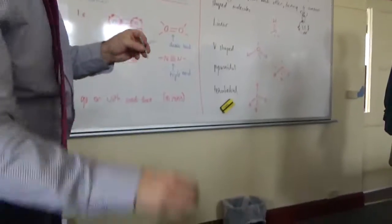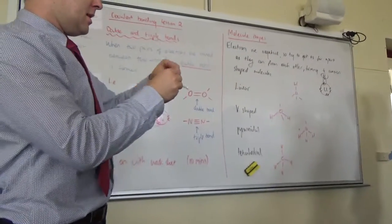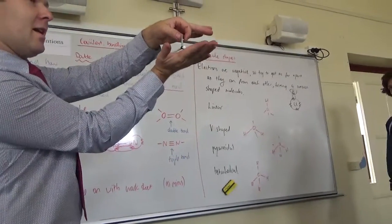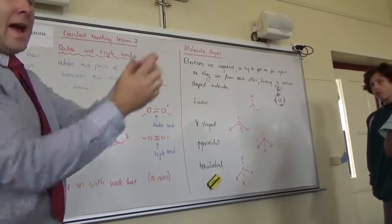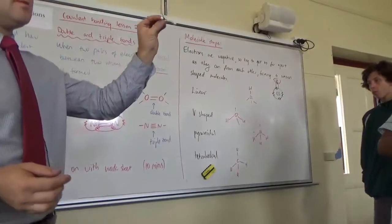If you add one more hydrogen, so if it's got three things attached, it forms a pyramidal shape. So, you can see it's kind of like a little pyramid. And if it's got four things attached, it's called tetrahedral. Pretty simple, right?